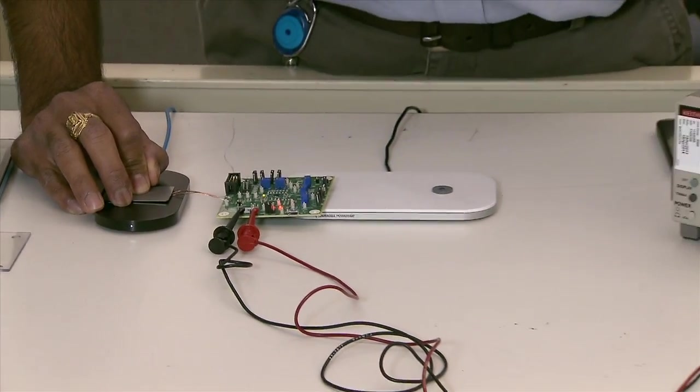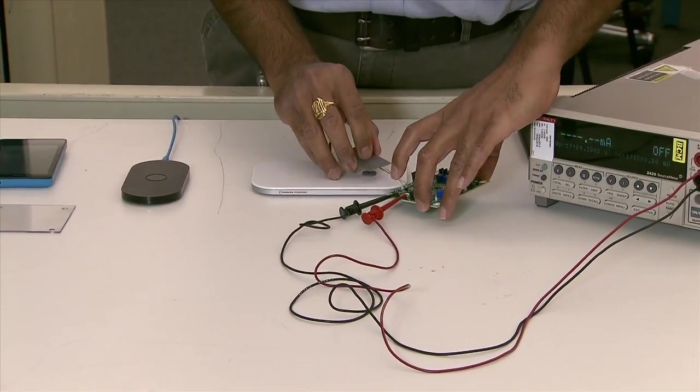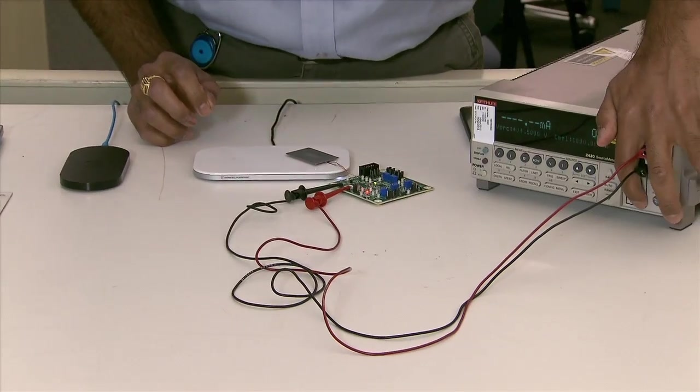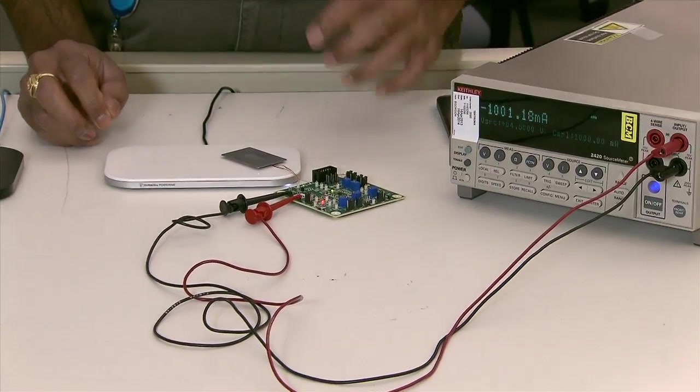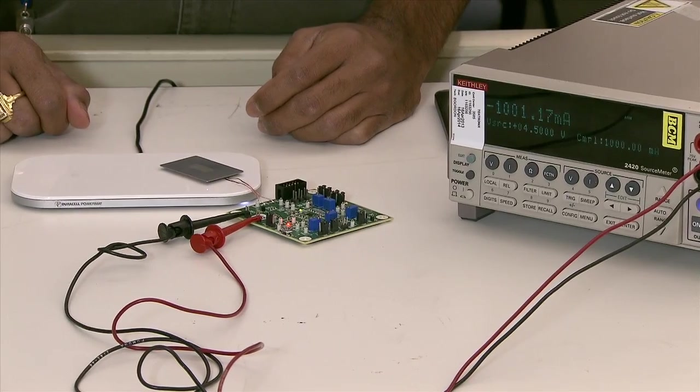Now, I will take the same EVM and move it over to the PMA compliant transmitter and show you delivering 5 watts. As you can see, it also delivers 5 watts on a PMA compliant transmitter.